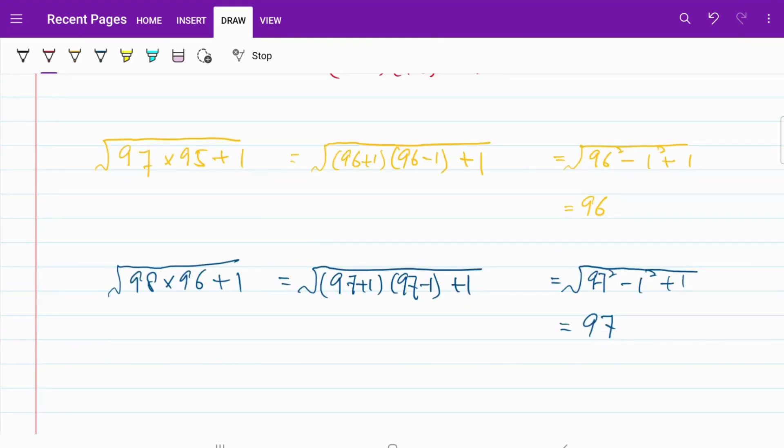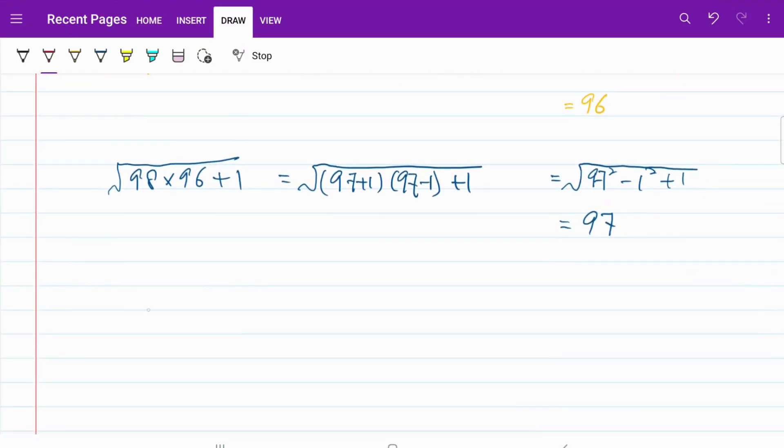Finally, let's move on to our final square root, which is the red color one. The red color square root will be equal to 99 multiplied by 97 plus 1 contained within the square root. We're doing the same thing here. It will be equal to 98 plus 1, 98 minus 1 plus 1. And that is equal to 98.